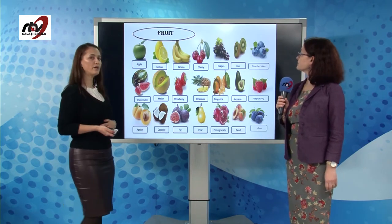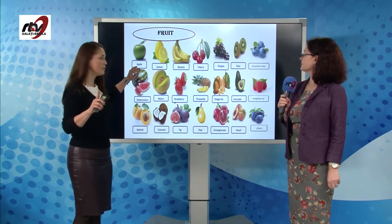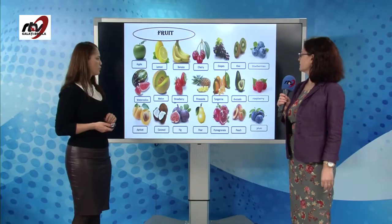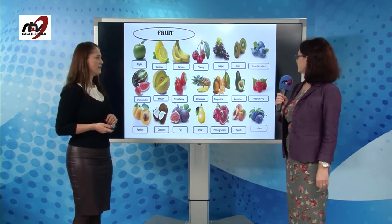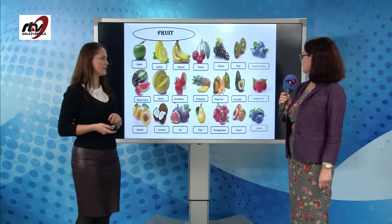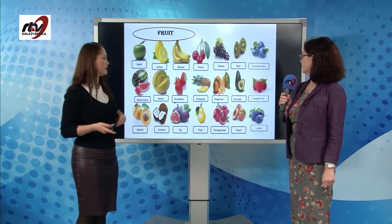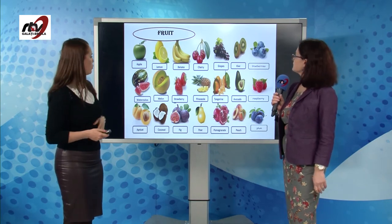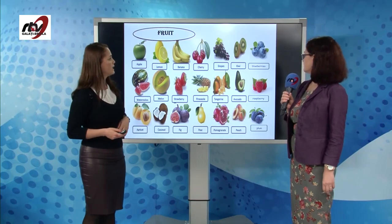Let's start with fruit. I hope you know most of them. You may pause the video, repeat, and then start again. Apple, lemon, banana, cherry, grapes, kiwi, blueberries, watermelon, melon, strawberry, pineapple, tangerine, avocado, raspberry, apricot, coconut, fig, pear, pomegranate, peach, plum. Tangerine, if you do not know it, in Romanian it's mandarina. We should also keep in mind fruits like orange, clementine, or blackberry — it's in the berry family.